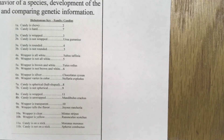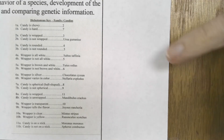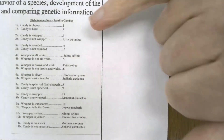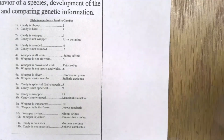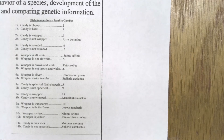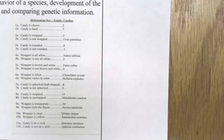Whenever you're using a dichotomous key and it gives you a number — you can see 2 and 7 are your choices on that first line — sometimes it says 'go to number 2' or 'go to number 7,' and you follow those numbers until you get to an answer. In this case, the answers are written as scientific names; they're just not italicized.